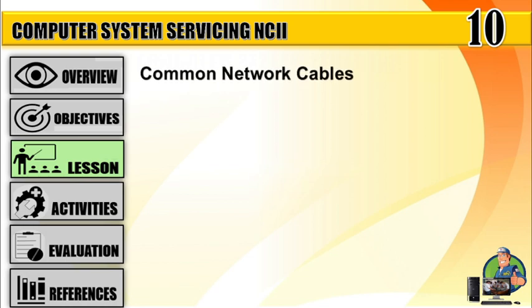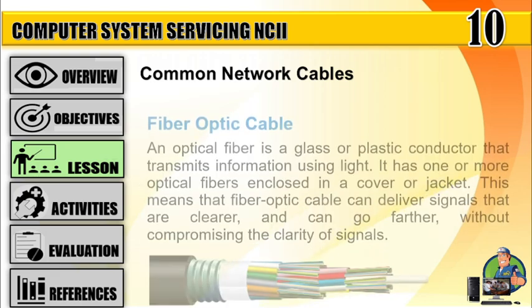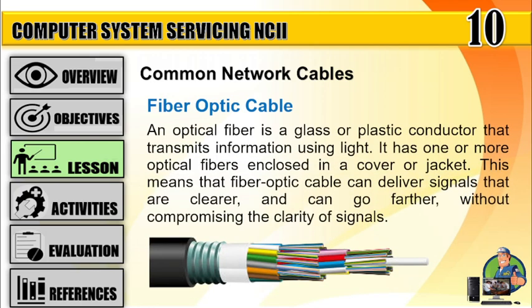Common network cables. Number 1: Coaxial cable. Number 2: Fiber optic cable — an optical fiber is a glass or plastic conductor that transmits information using light. It has one or more optical fibers enclosed in a cover or jacket. Fiber optic cable can deliver signals that are clearer and can go farther without compromising the clarity of signals.